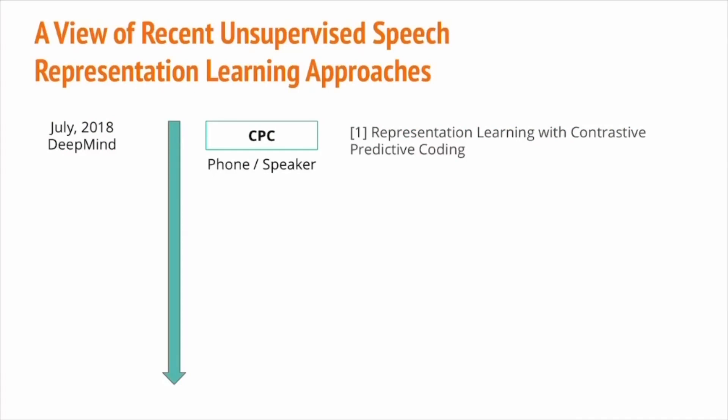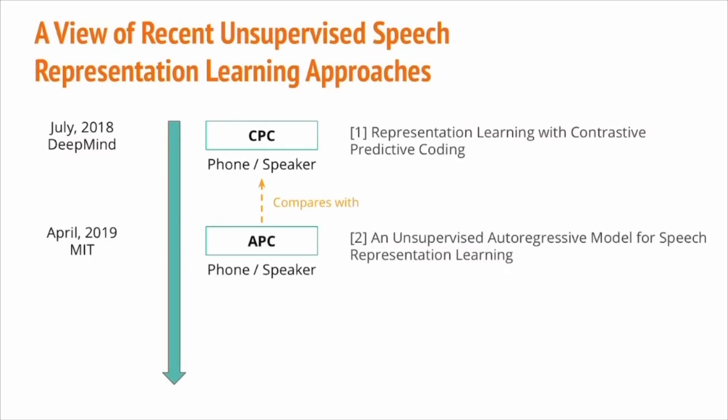In 2018, DeepMind introduced the Contrastive Predictive Coding approach. A five-layer CNN with a sequence model of GRU is used to encode past contexts, while the model predicts the future to solve the contrastive binary classification task. In 2019, MIT introduced the Autoregressive Predictive Coding, largely inspired by language models for text. The APC model can be seen as a speech version of a text language model. Both the CPC and APC papers evaluated with downstream phone and speaker classification tasks, and the APC approach claims to outperform CPC.